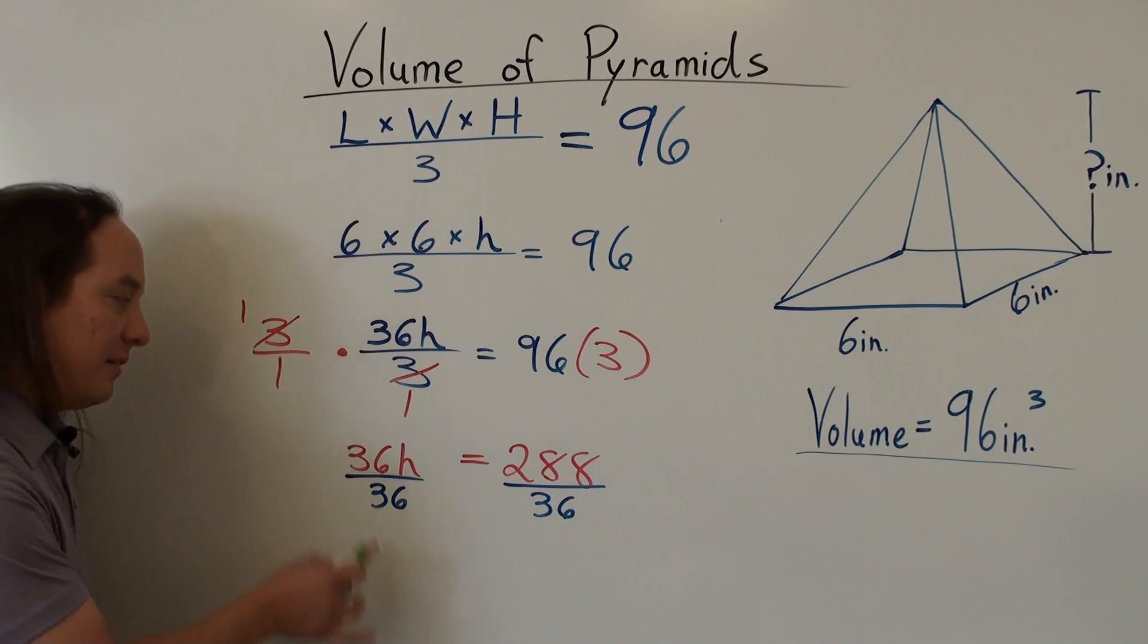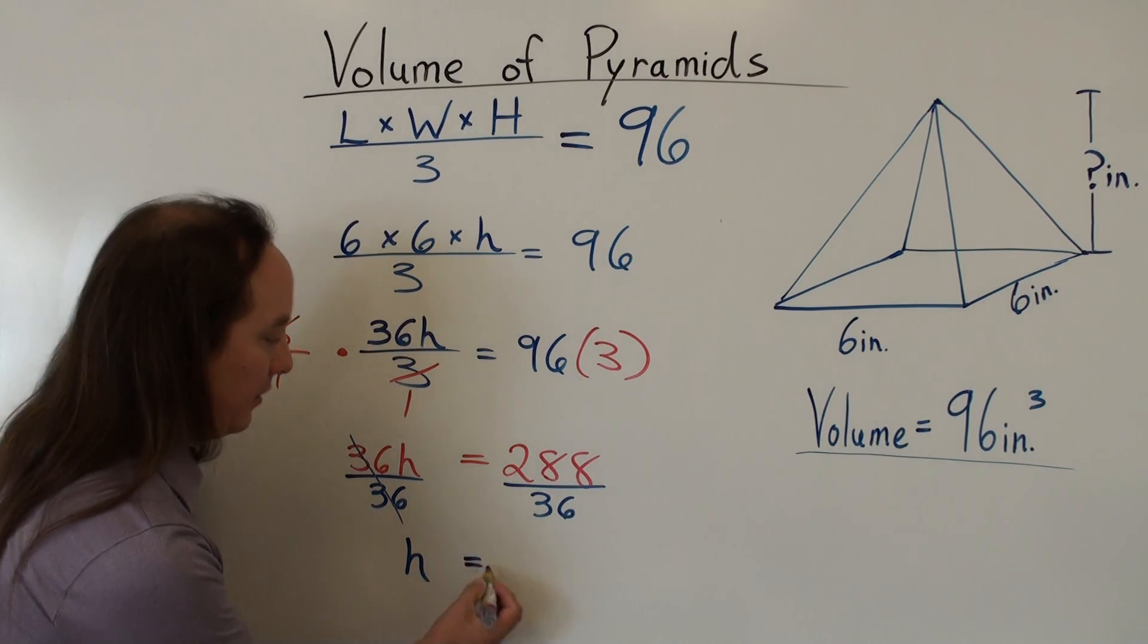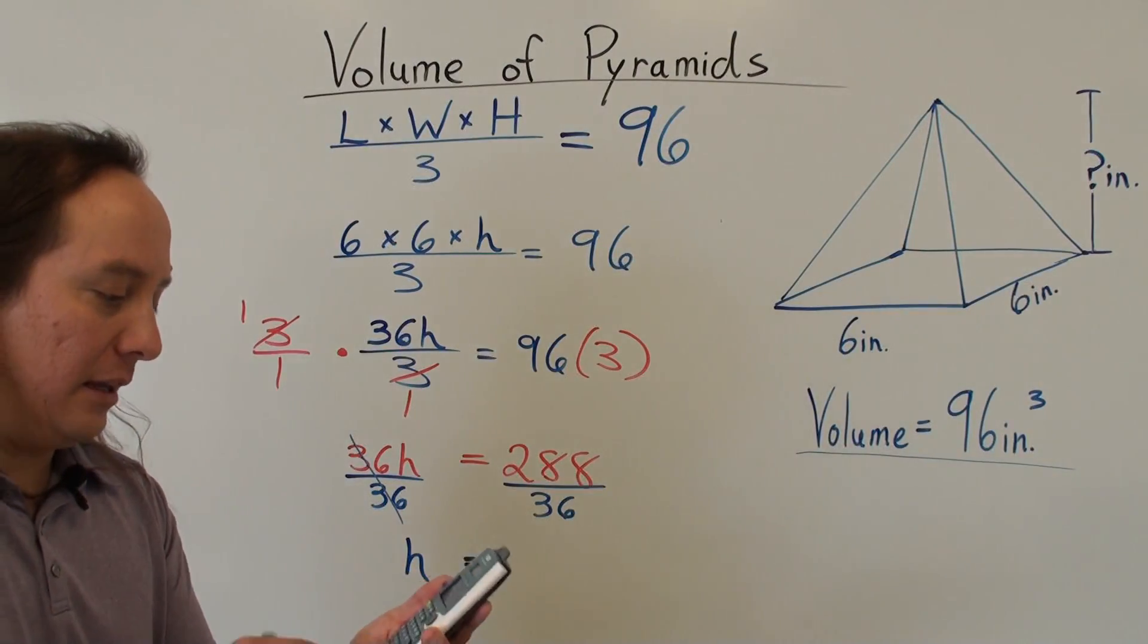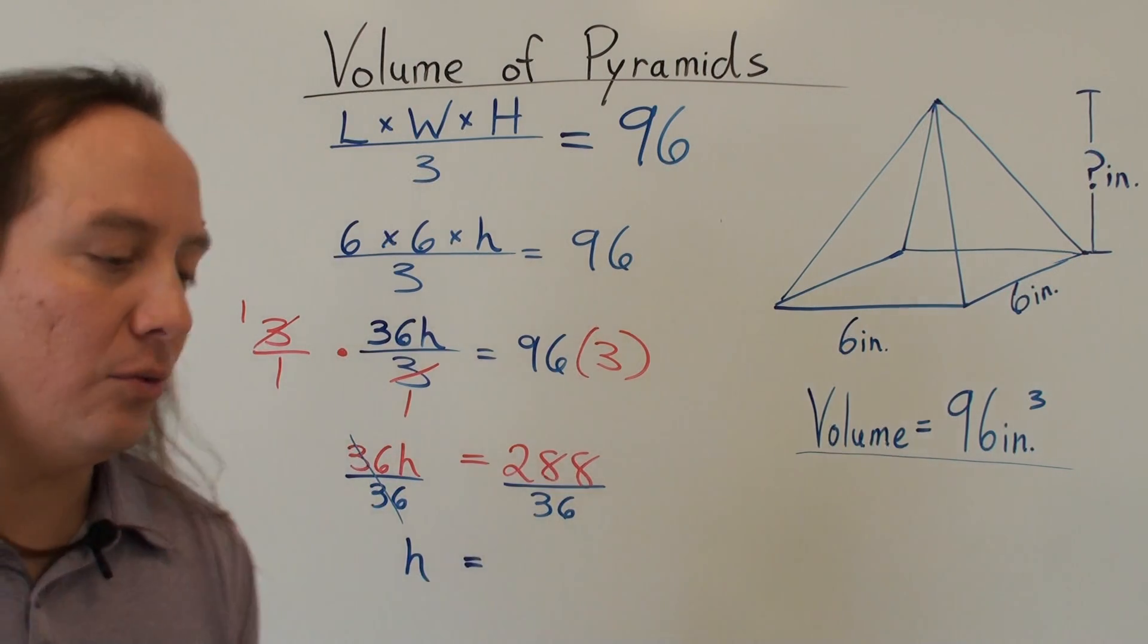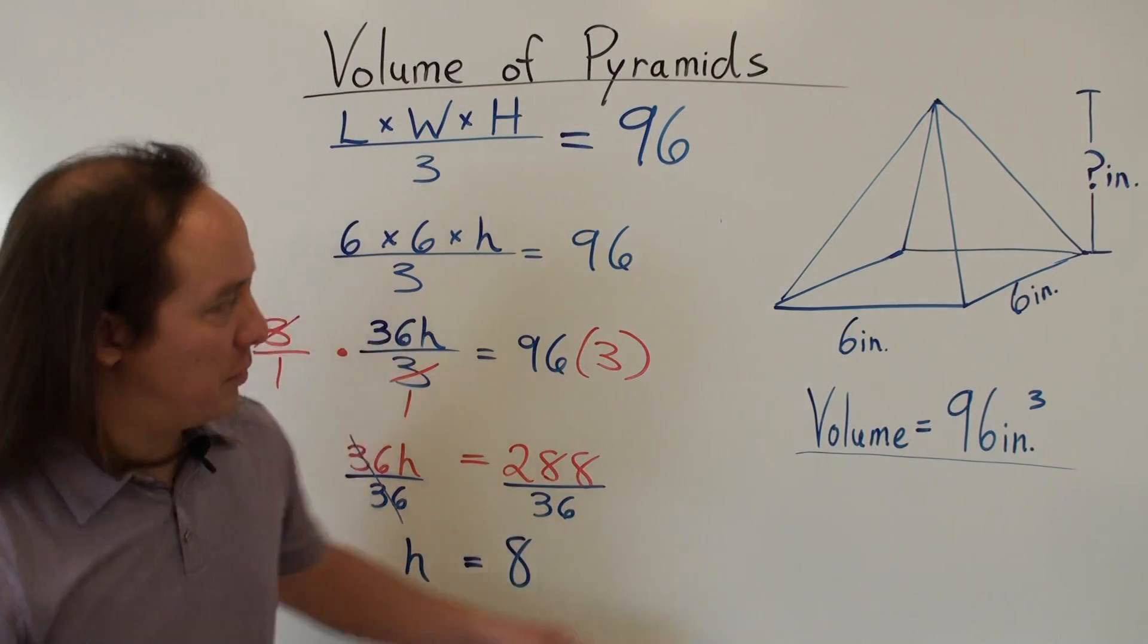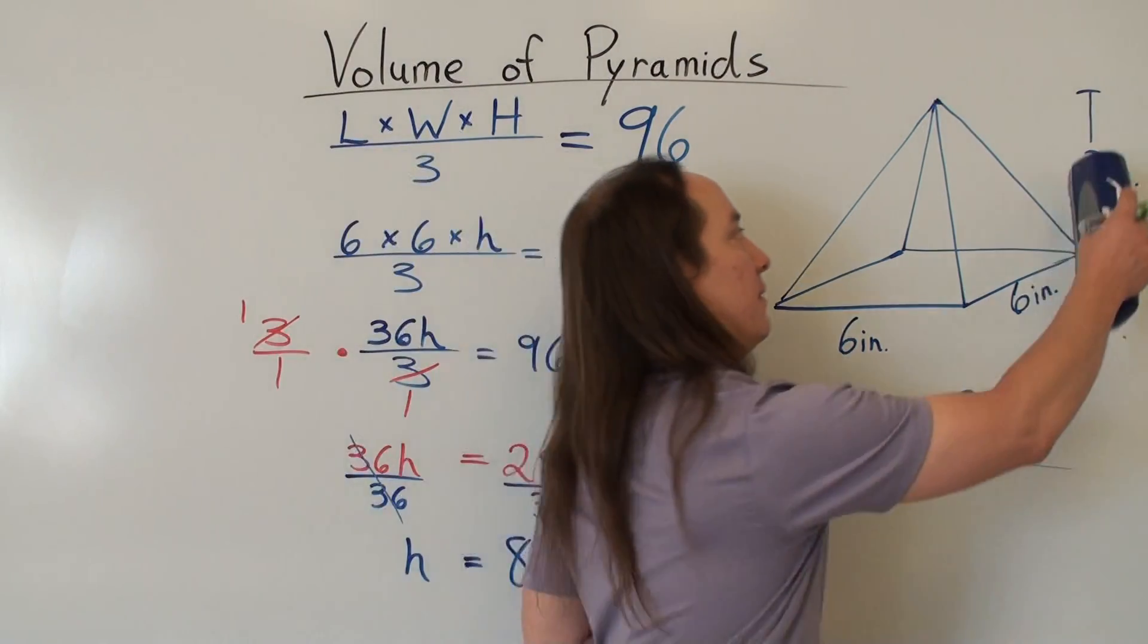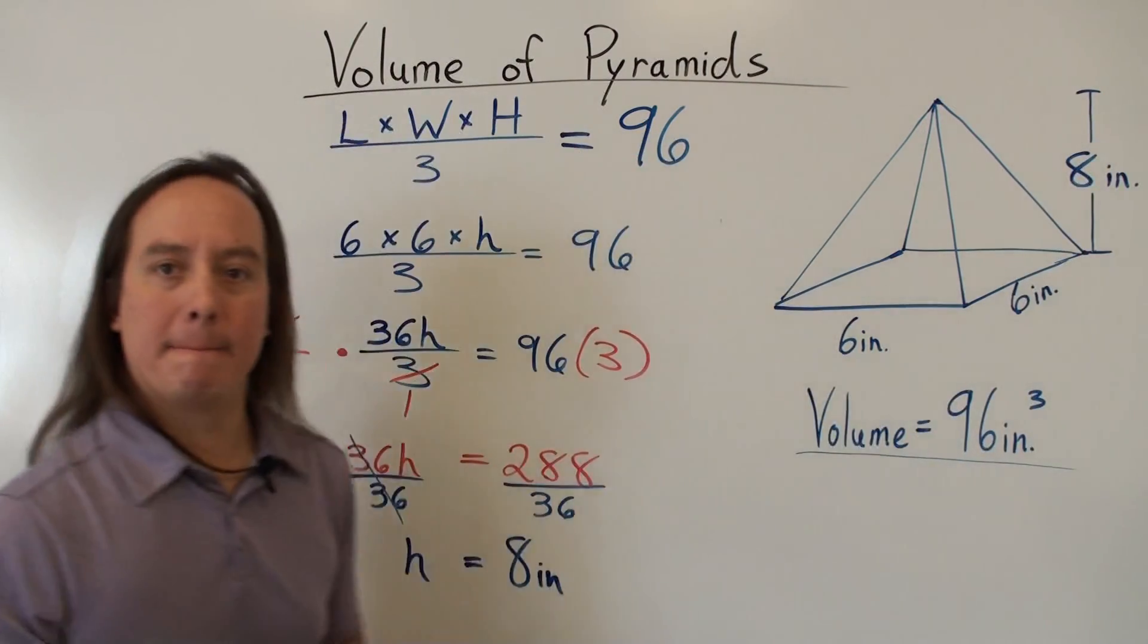So 36 divided by 36 is 1. 1h is just h. I think you guys can still see that. And then 288 divided by 36. Again, I can do it by hand, but I'm going to go ahead and use my calculator here. 288 divided by 36 is equal to 8. So that works out really nice. 8 and might as well put the units. 8 inches. And that's what the height of this pyramid is. So get rid of that little question mark and I can put 8 inches high.